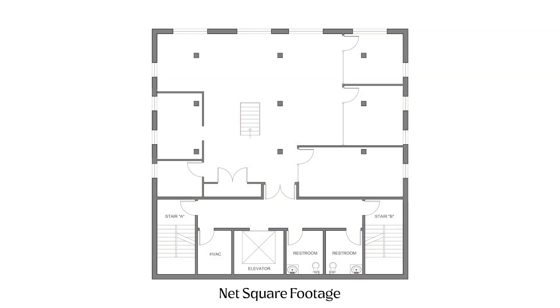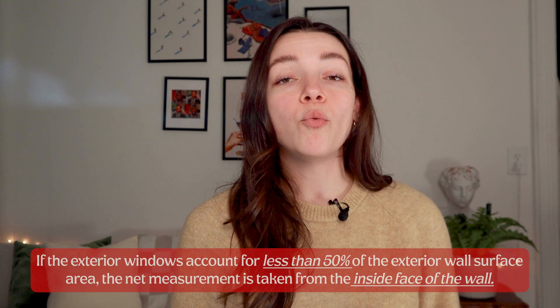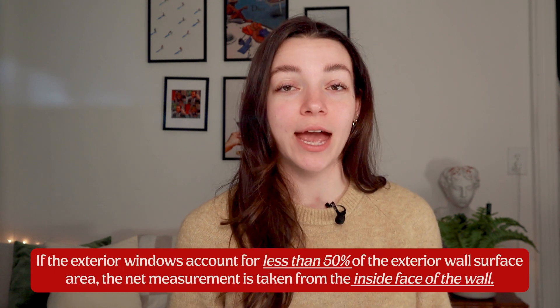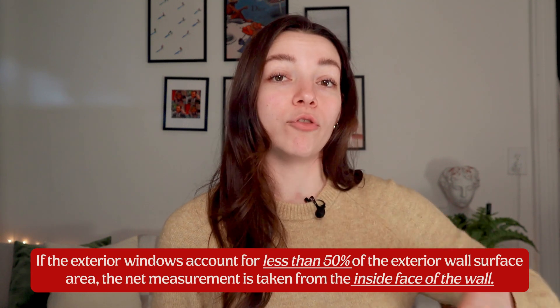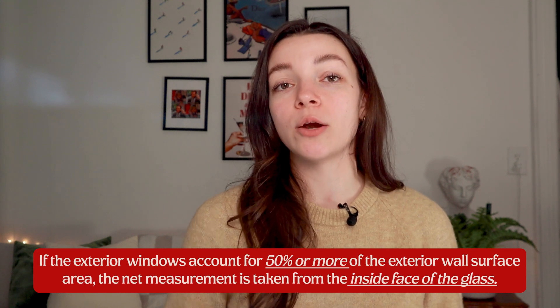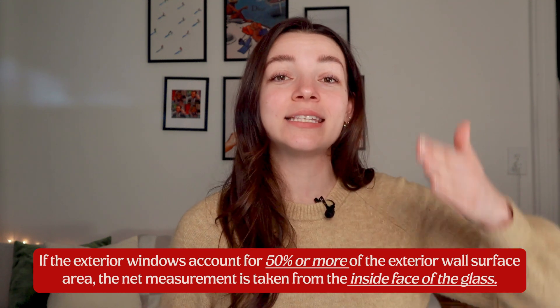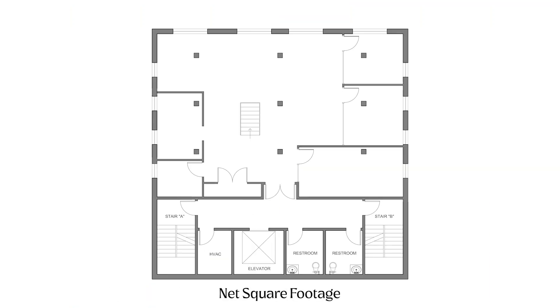Now let's measure this tenant's net square footage. Net square footage does not include exterior walls, so we measure from the interior face of exterior walls. The dominant material of the exterior wall determines exactly where you're measuring from. If windows account for less than 50% of the surface area, measure from the inside of the wall face. But if the wall is 50% or more glass, measure from the inside face of the glass. For a large building, this difference could mean hundreds of square feet and thousands of dollars in lost rent.